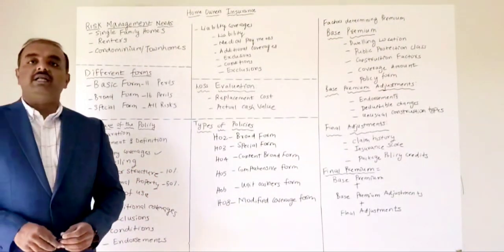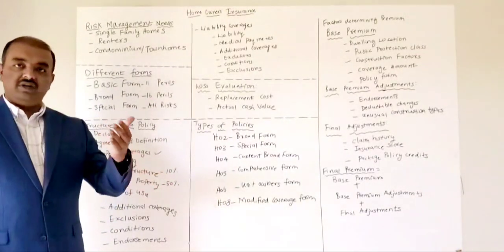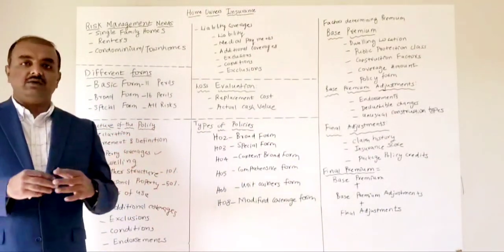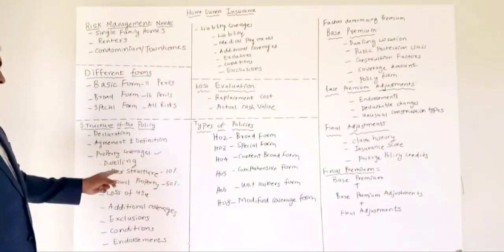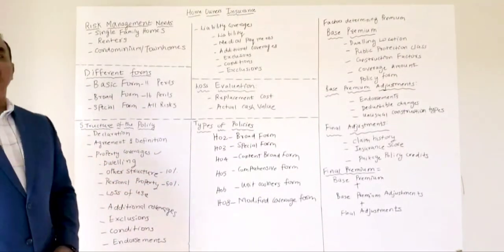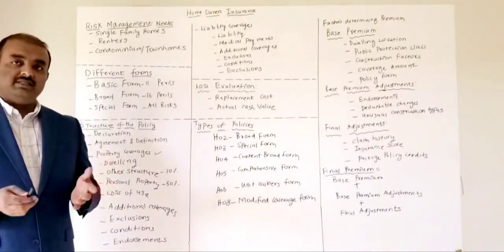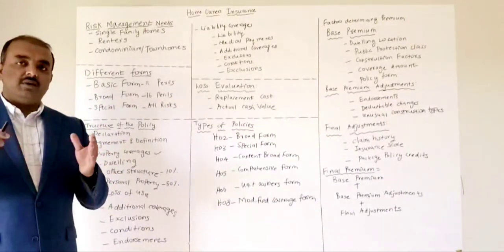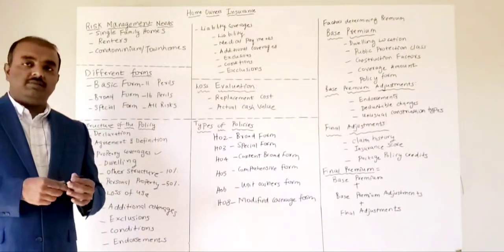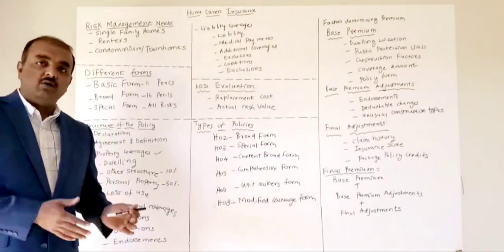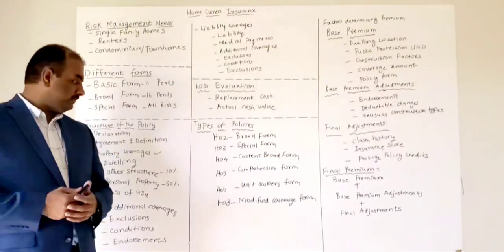Personal property coverage can cover anything you have in your home — your TV, your fridge, your refrigerator, or anything else. The coverage is typically 50% of the original dwelling coverage. One important thing to know about personal property is that it doesn't have to be in your home — say you take your personal property outside to play golf; it will still be covered.